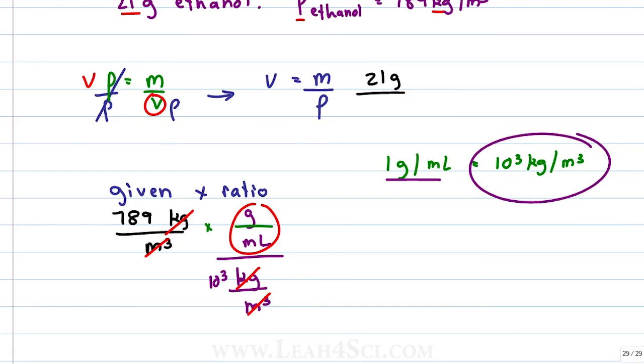This allows us to cancel out kilogram per meter cubed, giving us our answer in units of grams per milliliter, but we have to divide by 10³. From here we simply use the decimal trick. When dividing by 10³, we just move the decimal back three spaces, which gives us 0.789 grams per milliliter.